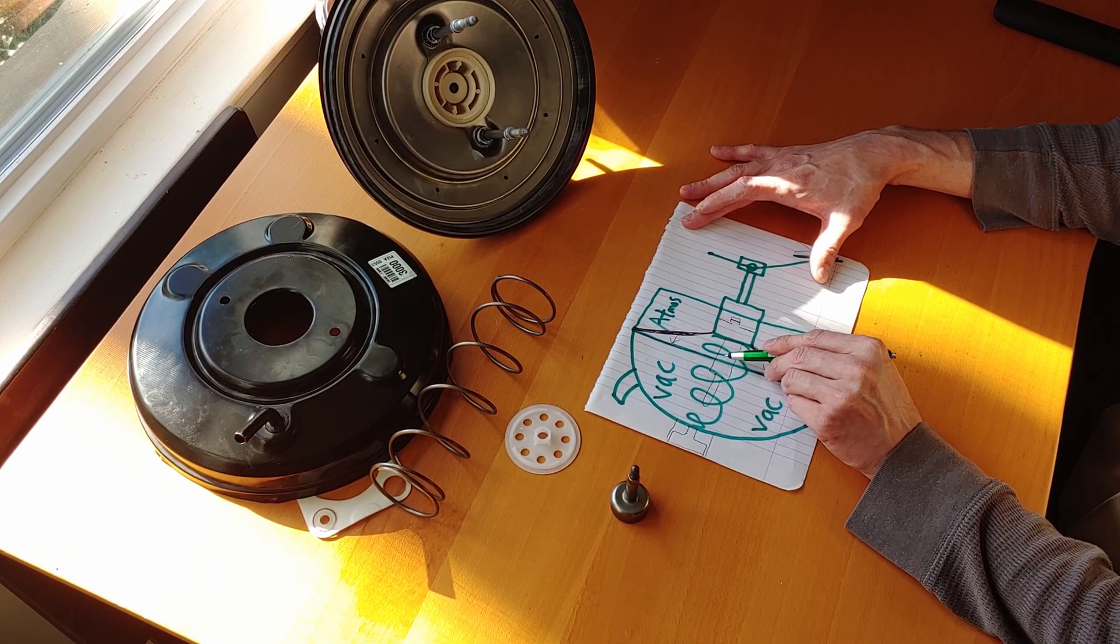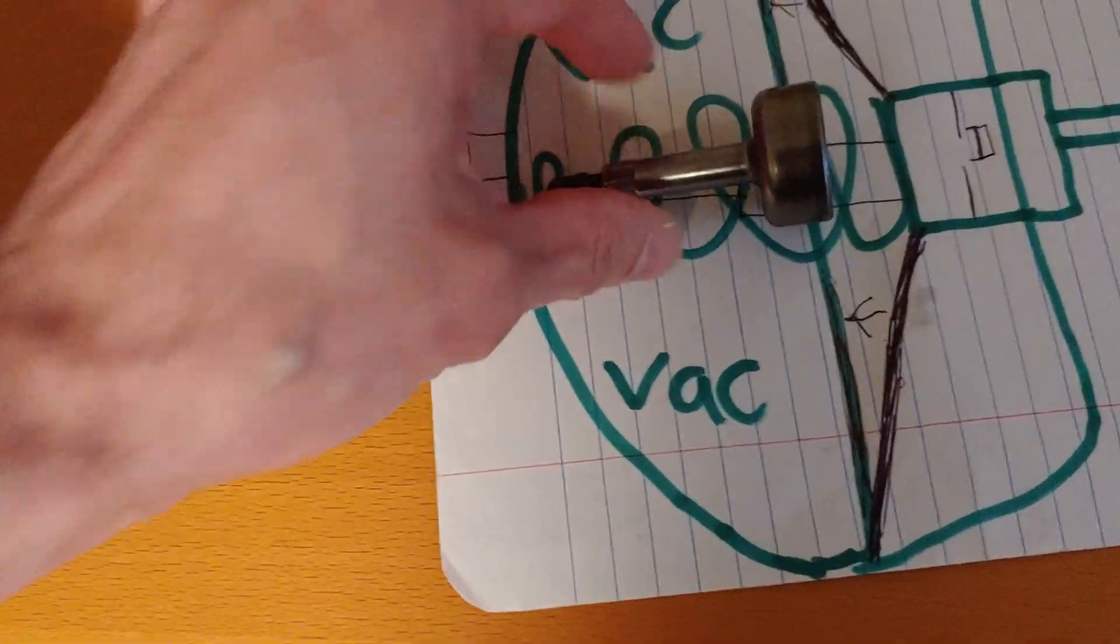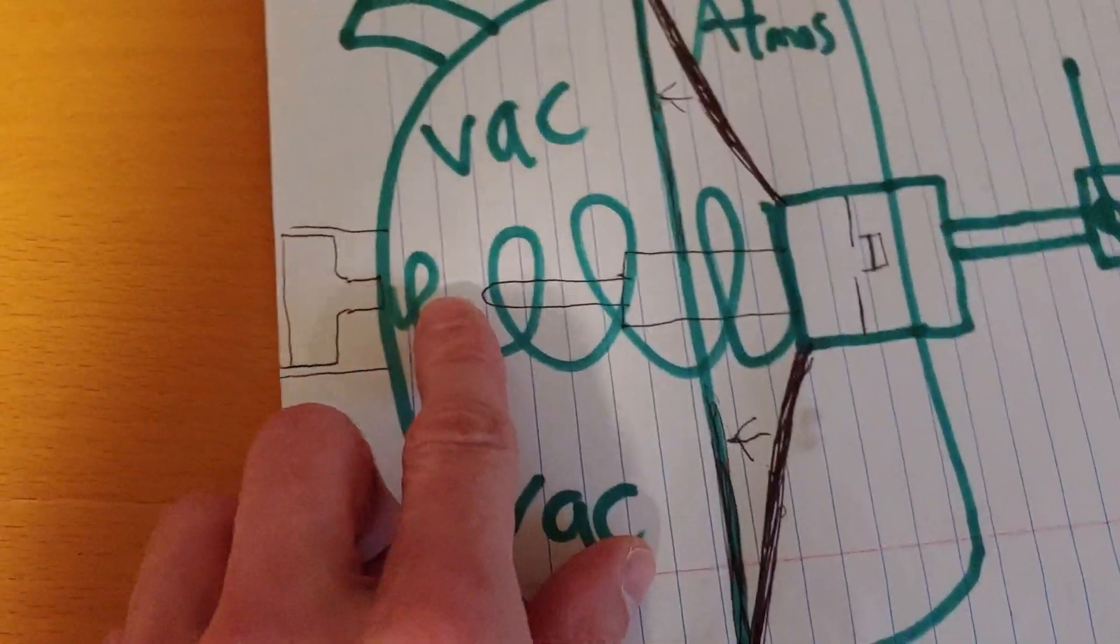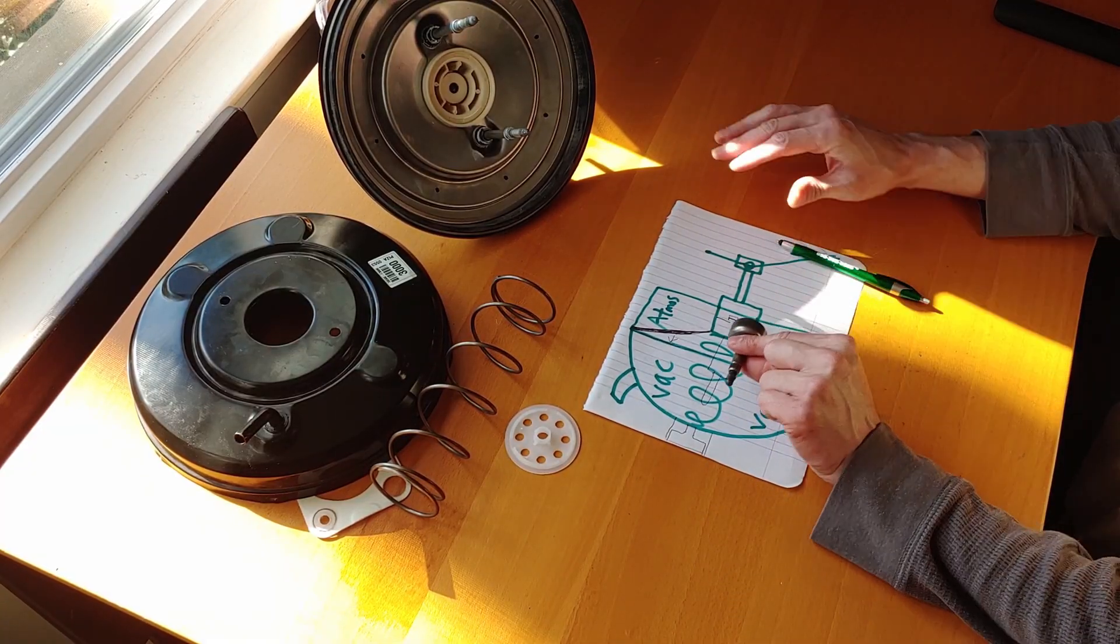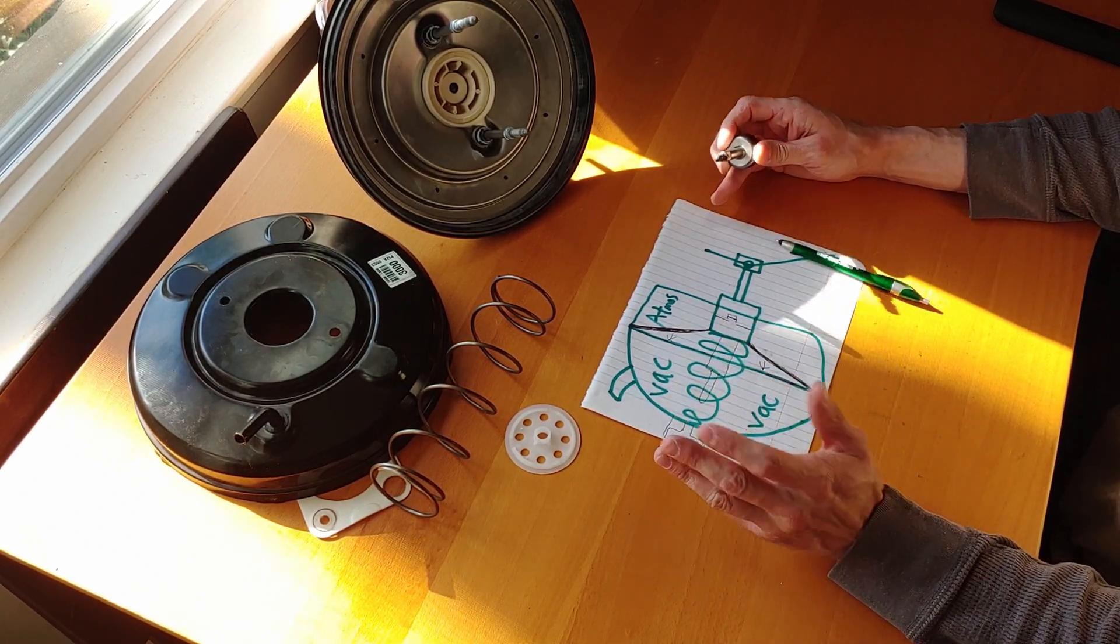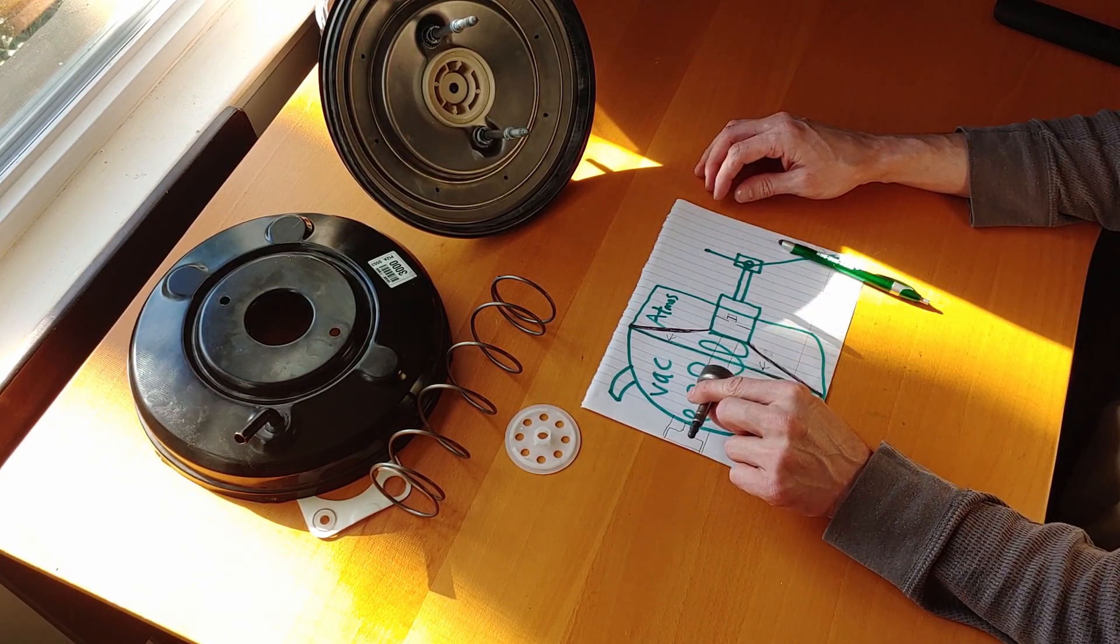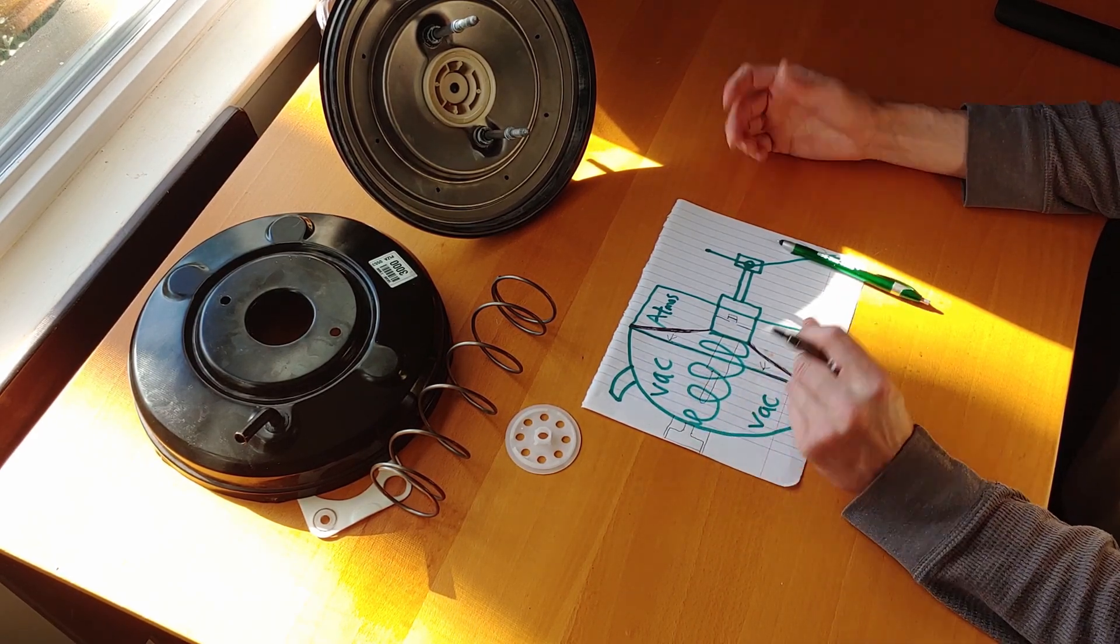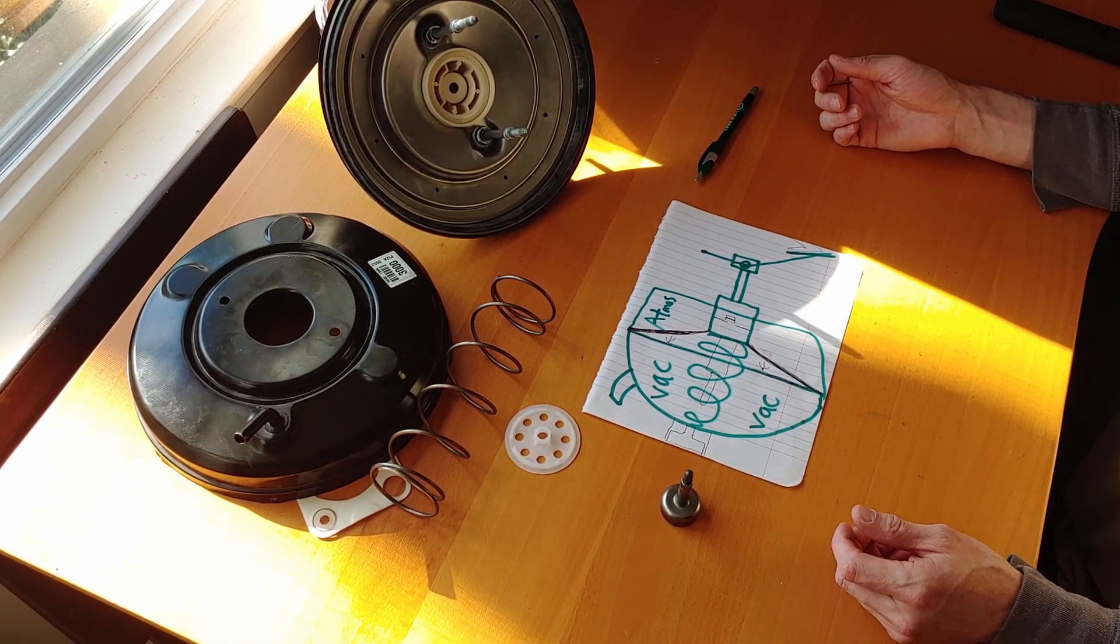When that gets pushed in, this diaphragm straightens out, which then pushes this component right here. Just as a clarification, this would be resting against that. It would not have that big of a space, that would not be good for a braking system. Which is this, that pushes into the master cylinder, which that's a whole other video. I've got to try to find a master cylinder and take apart.